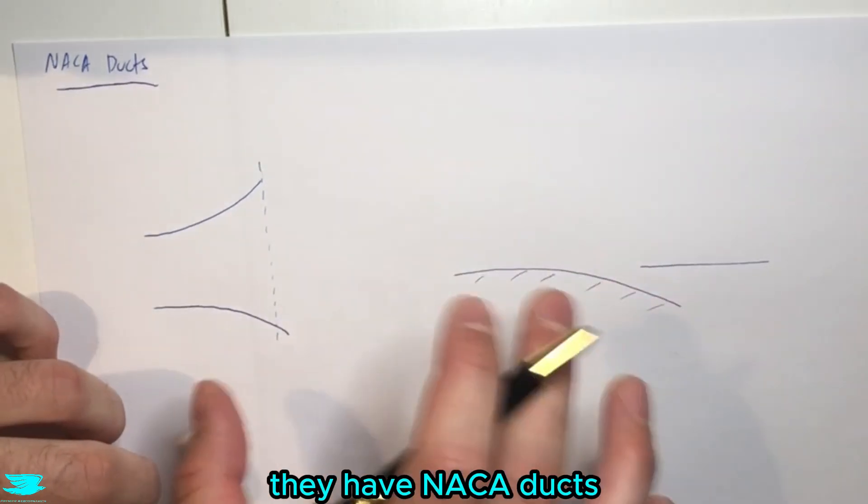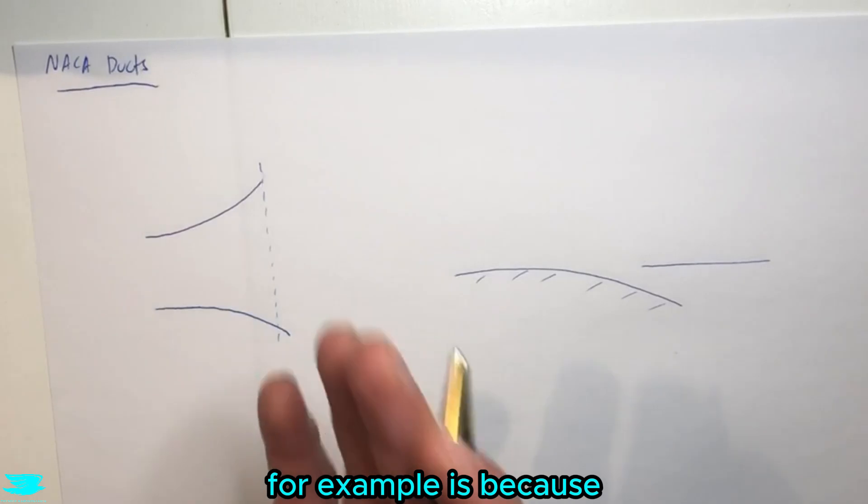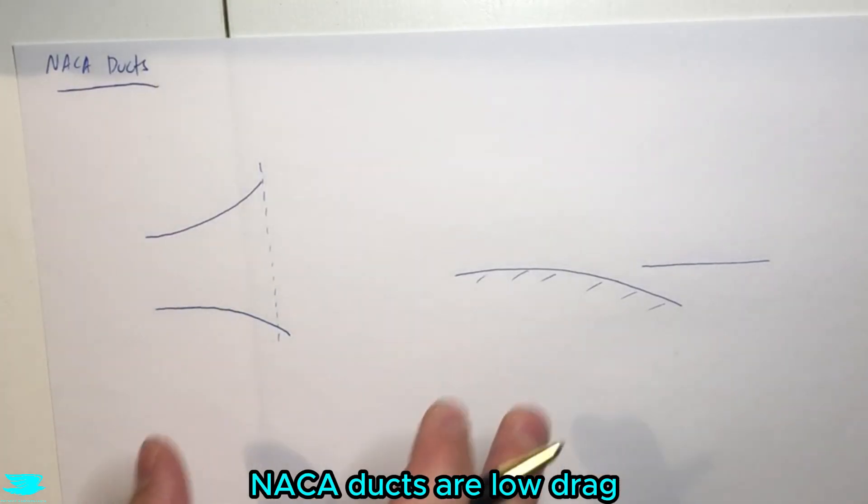And the main reason why they have NACA ducts as opposed to other types of air inlets, like a scoop, for example, is because NACA ducts are low drag.